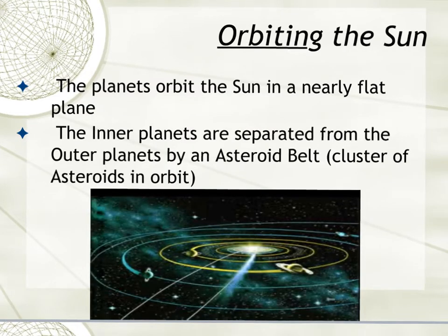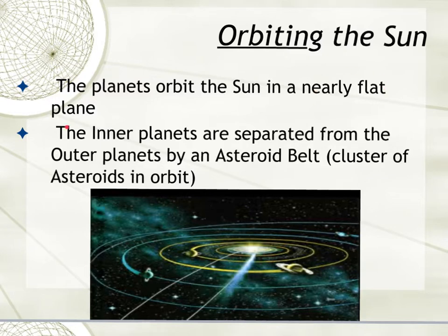Planets actually orbit the sun in what is nearly a flat plane. If you look at a dinner plate, the sun is in the middle and the planets are circling the dinner plate around the sun — they're all on a flat plane as if they were on a dinner plate. If you're interested in learning more about this flat plane and why it exists, I'm going to post a video below.